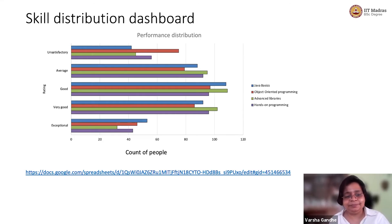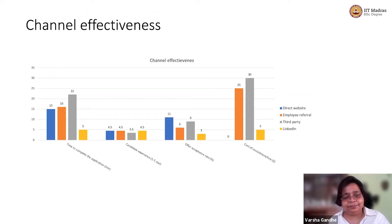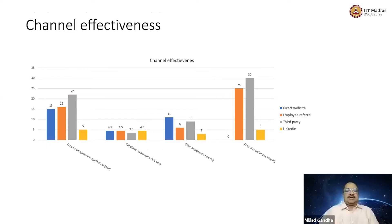The next dashboard, Varsha — as GV mentioned, we looked at channel effectiveness. We looked at four parameters to measure channel effectiveness, as you had guided us: time to complete the application, candidate experience, offer acceptance rate, and cost of recruitment and hiring. And we looked at four different channels: direct website, employee referral, third party, and LinkedIn.